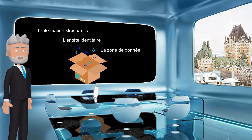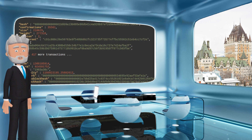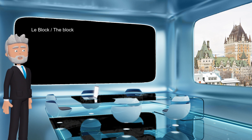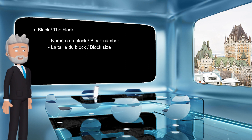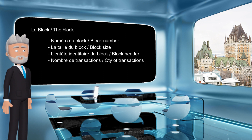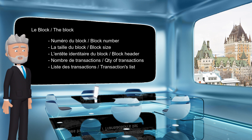On peut donc imaginer l'information structurelle comme étant une structure JSON qui contiendra les autres informations du bloc. Cette structure comporte les valeurs suivantes : le numéro du bloc, la taille du bloc, l'entête identitaire du bloc, le nombre de transactions qui sera inclus dans le bloc, et la liste des transactions ou des résultats d'exécution.